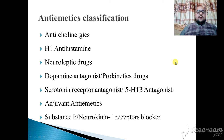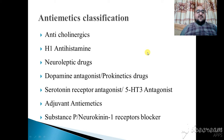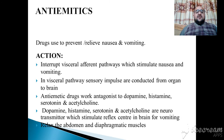Hello dear viewers. As we have already talked about drugs acting on the gastrointestinal tract, today our topic is anti-emetic classification. Anti-emetic drugs can be classified into different categories: anticholinergics, H1 antihistamines, neuroleptic drugs, dopamine antagonists, serotonin receptor antagonists, adjuvant anti-emetics, and substance P. Anti-emetics are drugs which are used to prevent and relieve nausea and vomiting.